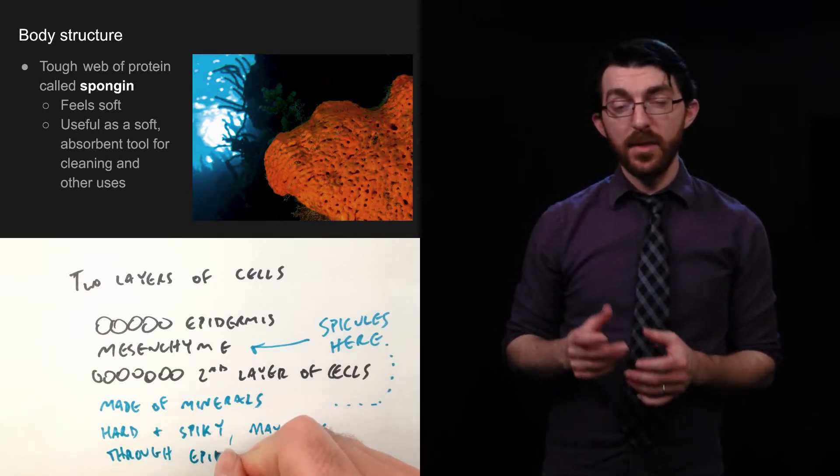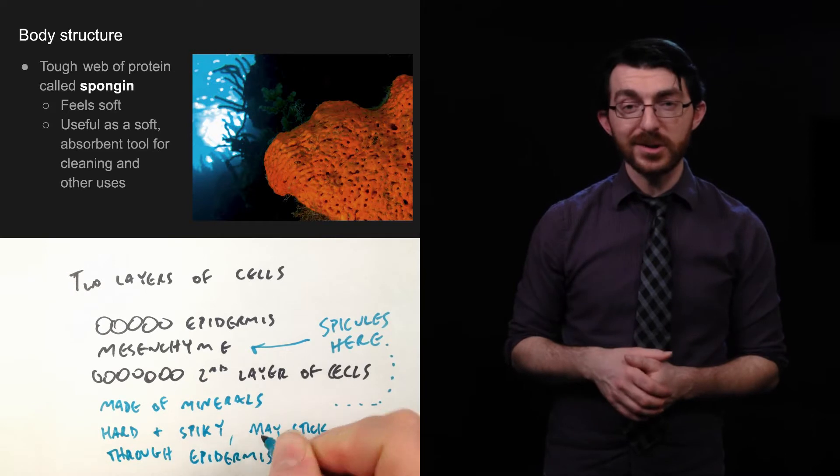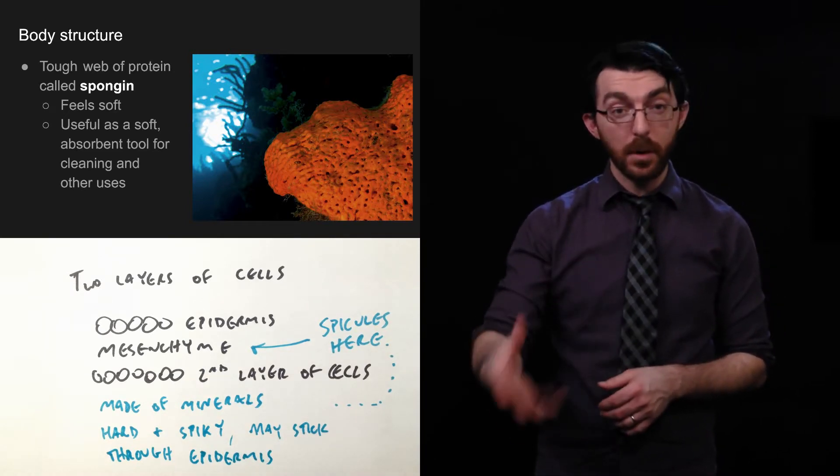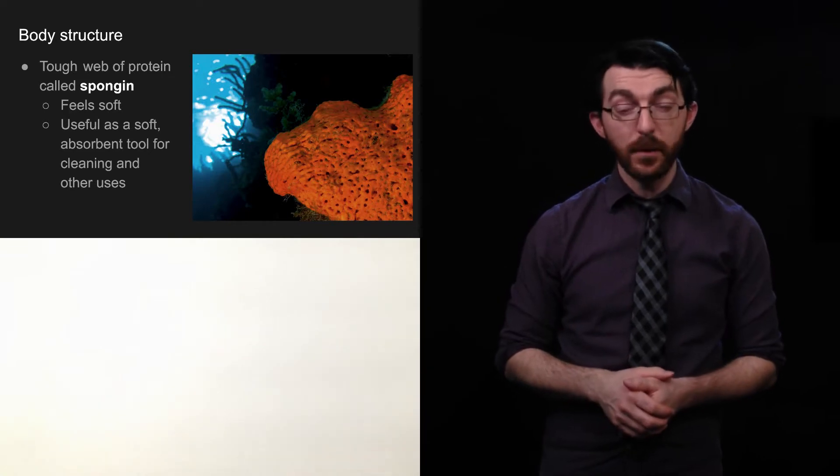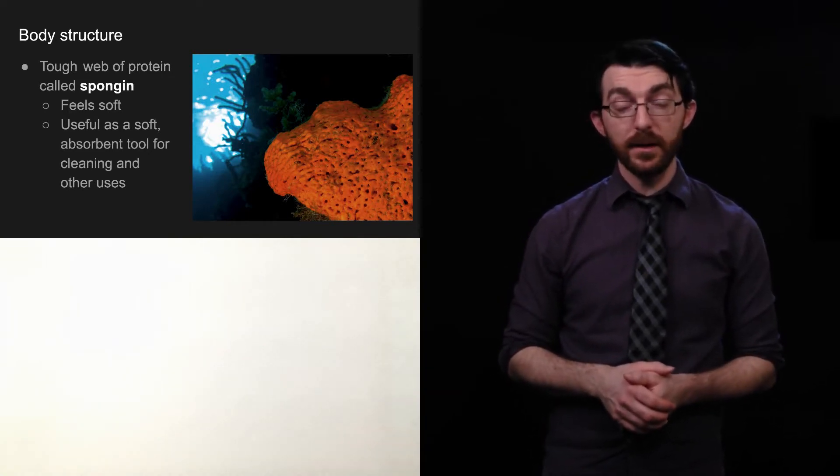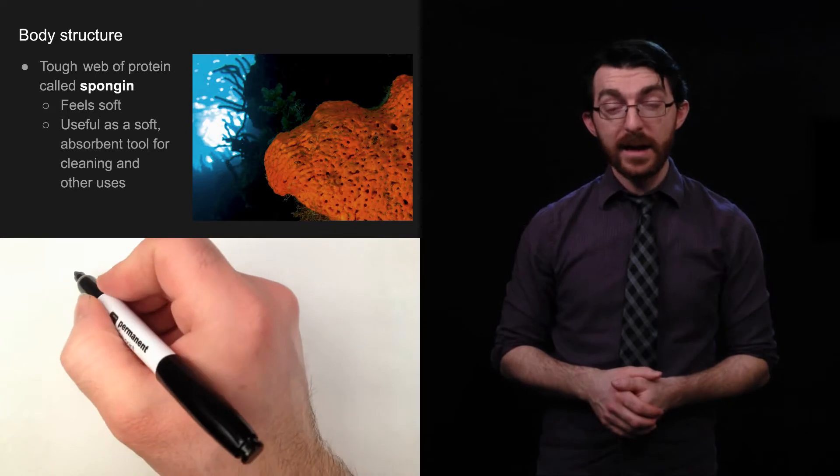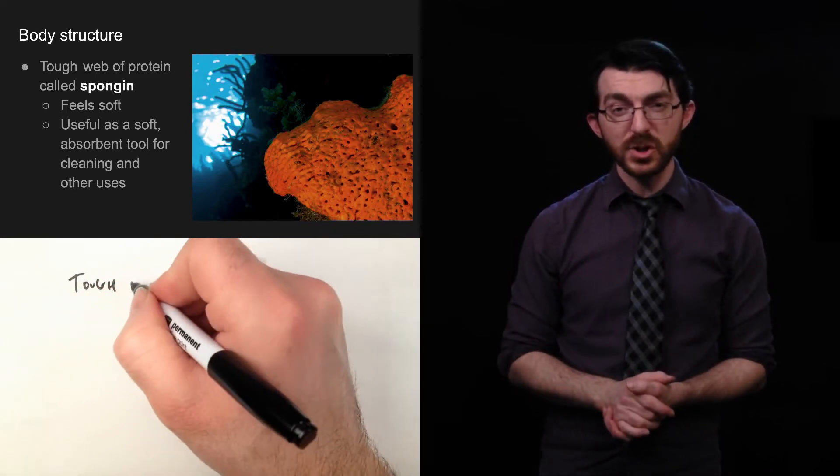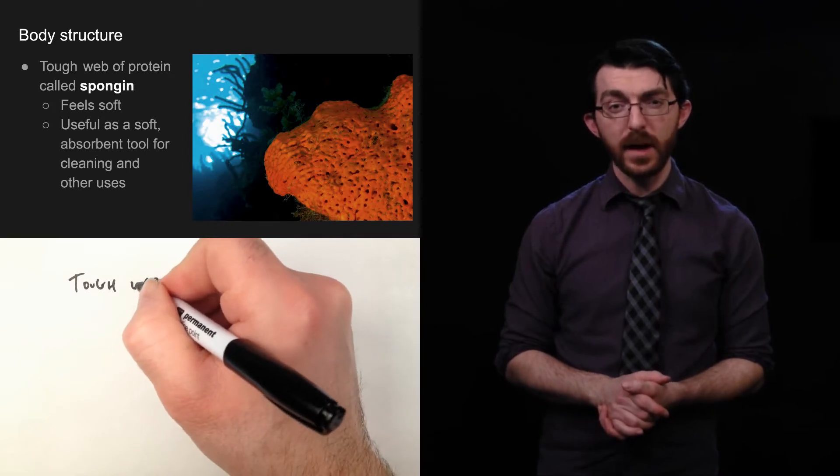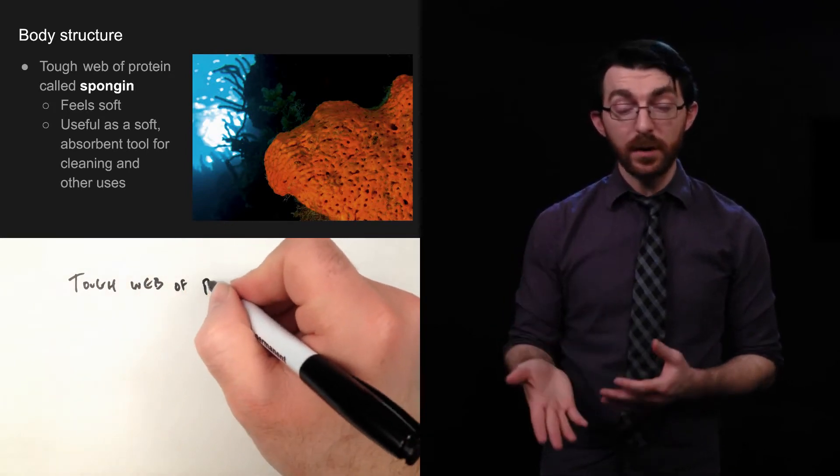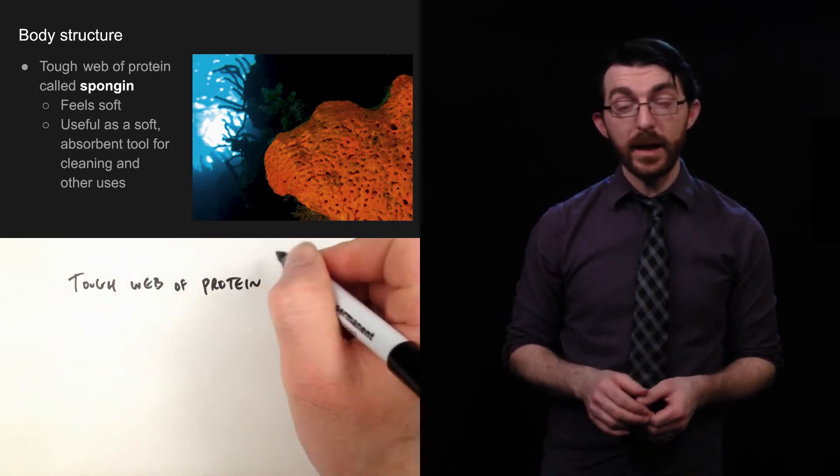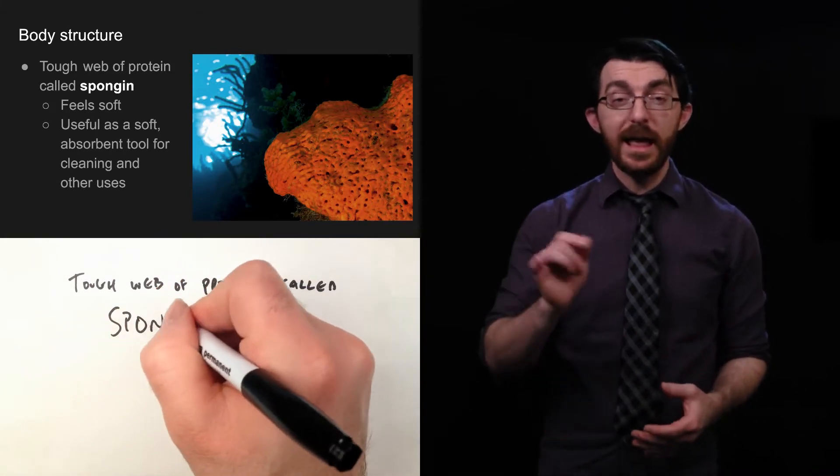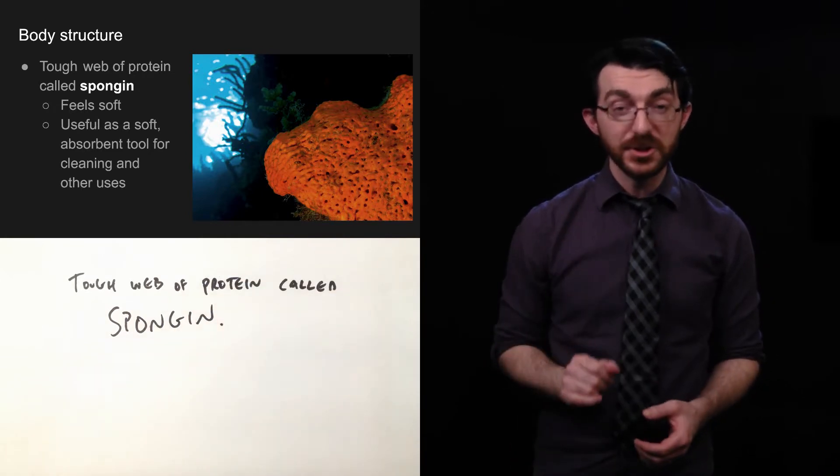So, that's the harder part of its body structure. There is a slightly softer part. It is a tough web of protein. It's called spongin, which is about the best name for sponge protein that I could possibly think of. And, this feels soft. So, it's kind of flexible. Not sharp and hard like the spicules. And, it's useful as a soft, absorbent tool for cleaning and other uses. So, if you were to have a natural sponge for cleaning, it would be made out of spongin.